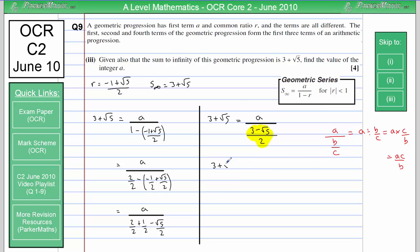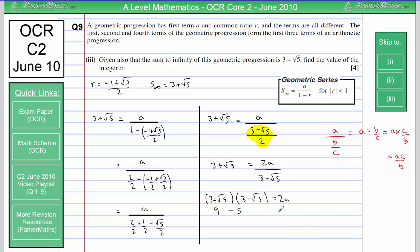So 3 plus root 5 equals 2A over 3 minus root 5. Multiplying both sides by 3 minus root 5: the left side is a conjugate pair expansion. 3 times 3 is 9, root 5 times 3 minus 3 root 5 cancels to 0, and root 5 times minus root 5 gives minus 5. So 9 minus 5 equals 2A, giving 4 equals 2A, and therefore A equals 2.